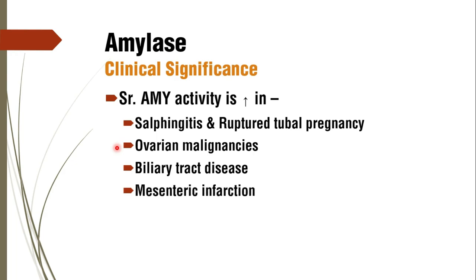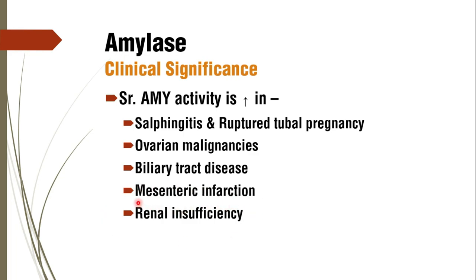Biliary tract disease and mesenteric infarction increase serum amylase because loss of blood supply causes necrosis of small intestinal tissue, releasing amylase into circulation. In renal insufficiency, because amylase has a smaller molecular weight of 54,000 to 62,000, it is normally excreted in urine; in renal failure it is not excreted, causing increased serum levels.